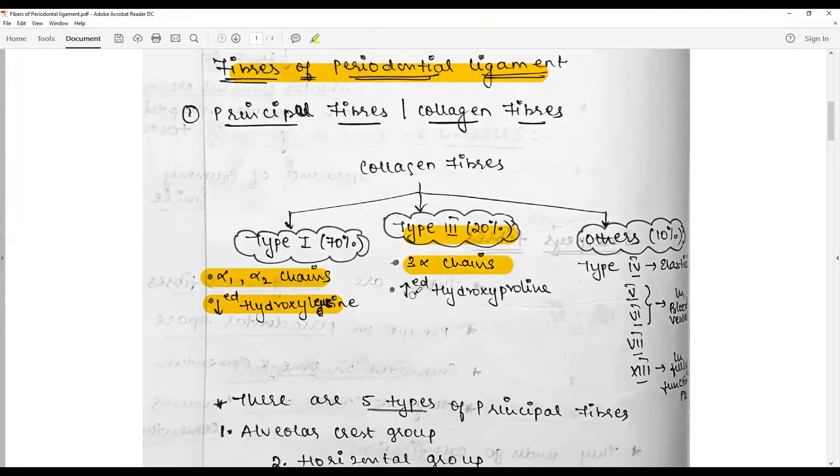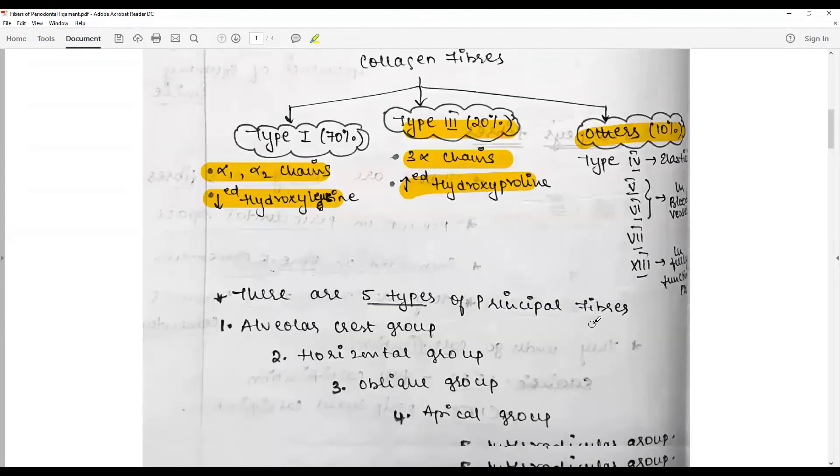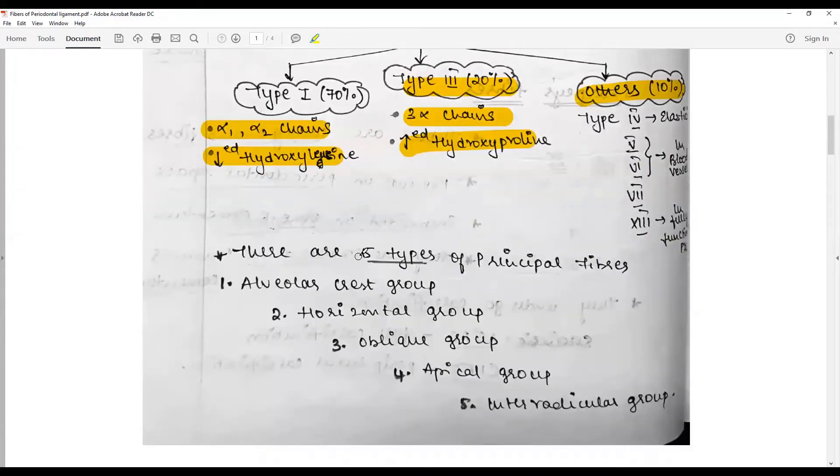Others are 10 percentage which could be elastin, blood vessels, or other types such as 4, 5, 6, 7, and 13. The collagen groups are arranged in five types of principal fibers.